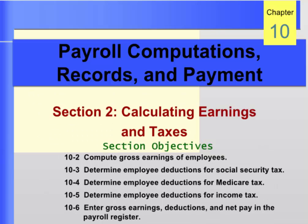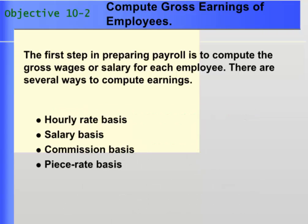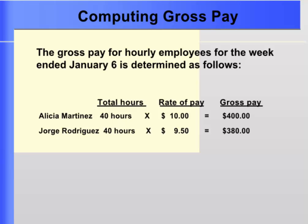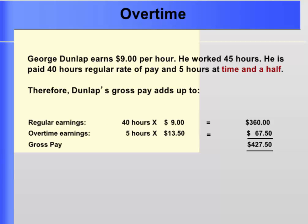Section 2 of the chapter deals with actual withholding calculations and recording them in the payroll register. The second objective is to compute gross earnings of employees. The first step in preparing payroll is to compute the gross wages or salary for each employee. Gross pay is calculated by multiplying the number of hours times the rate of pay, unless overtime is involved. If an employee worked over 40 hours, they are paid at one and one-half times the normal hourly rate for the time over 40 hours.